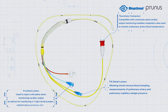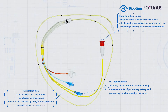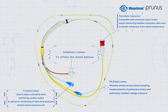The proximal lumen is used to inject cold saline when monitoring cardiac output, as well as for monitoring of right atrial pressure, central venous pressure, etc. The inflation lumen is used to inflate the distal balloon.